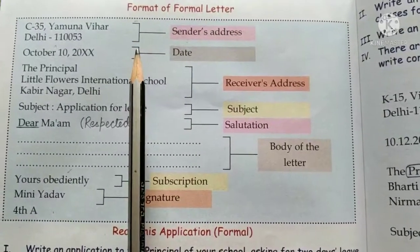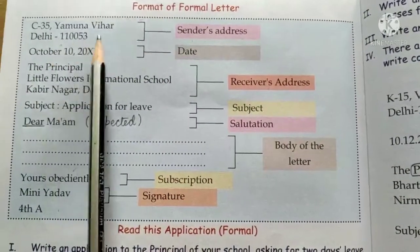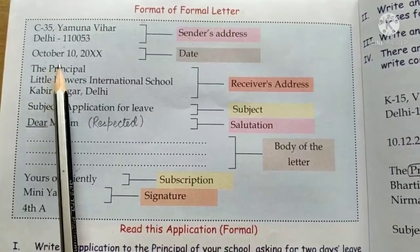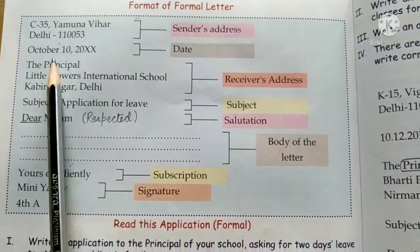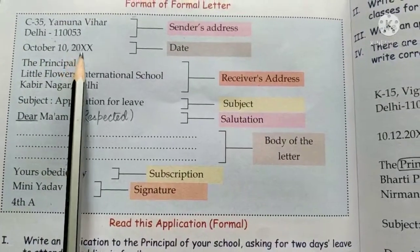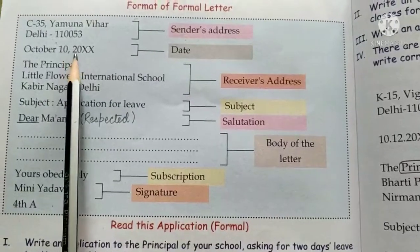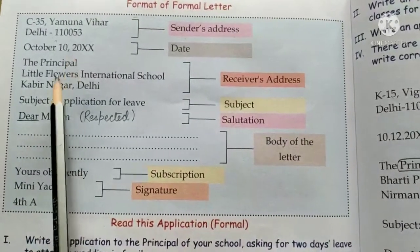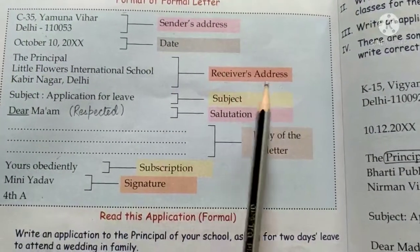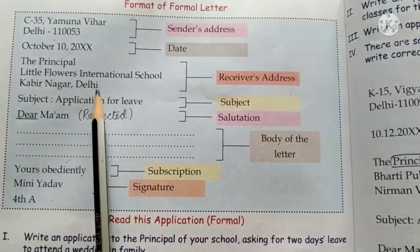We start with the sender's address — the person who is sending the letter. For example, if I am writing the letter, I am the sender, so I will write my address here. This is followed by the date, written as: December 20, 2021 — you have to put a comma after the date and before the year.